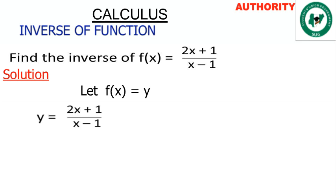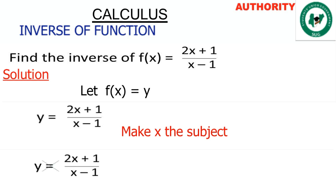Here we try to make x the subject, that is we want to solve for x. In this place y is the subject, so we want to make x stand in the place of this y. We have y equals 2x plus 1 all over x minus 1.